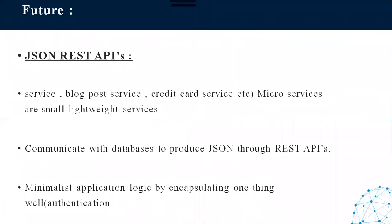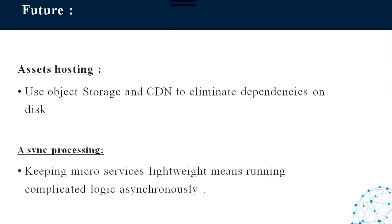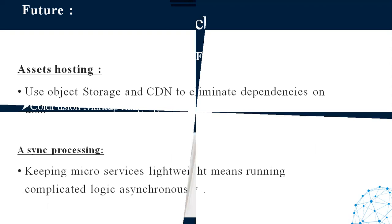In the JSON REST API model, there are various services such as blog post services, credit card services, and microservices — small lightweight services that communicate with the database to produce JSON through a REST API. There is minimalist application logic by encapsulating one thing well, providing authentication. Web object storage and CDN are used to eliminate dependencies on disk. Microservices are kept light between complicated logic.